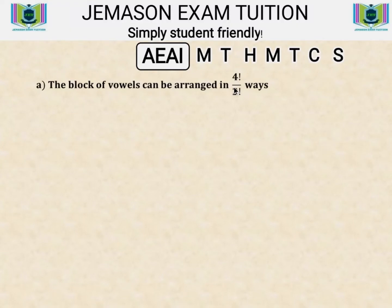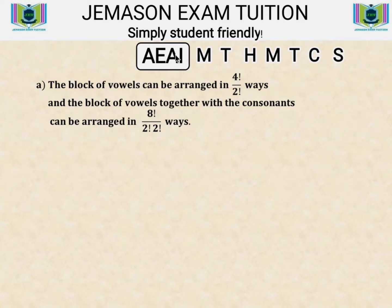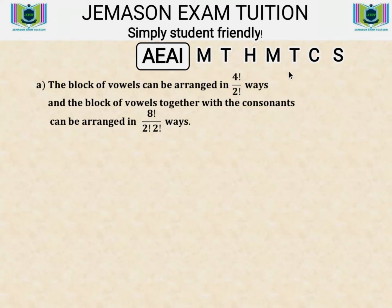The next step is to join the block of vowels together with the seven consonants. The block of vowels acts as one entity, so adding it to the seven consonants makes eight items. Arranging these eight items gives 8 factorial, as if arranging eight distinct objects. However, among the consonants there are repetitions — two M's and two T's — so there is redundancy in the arrangement.